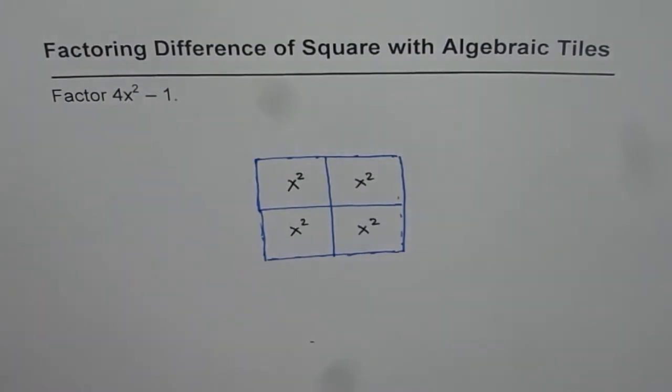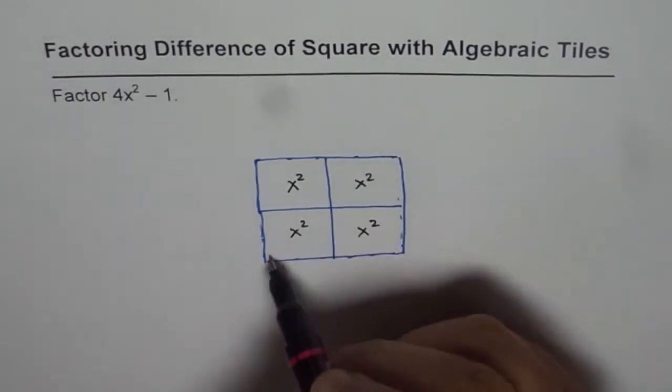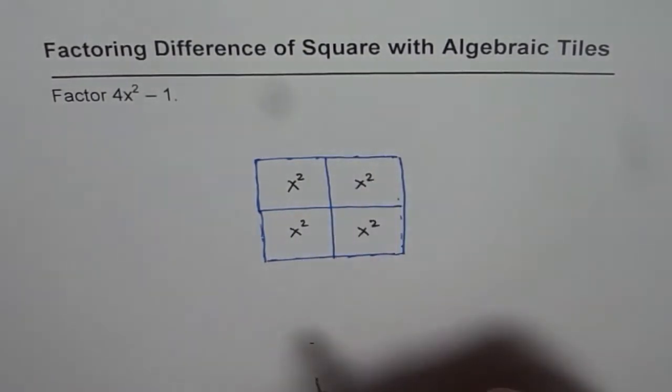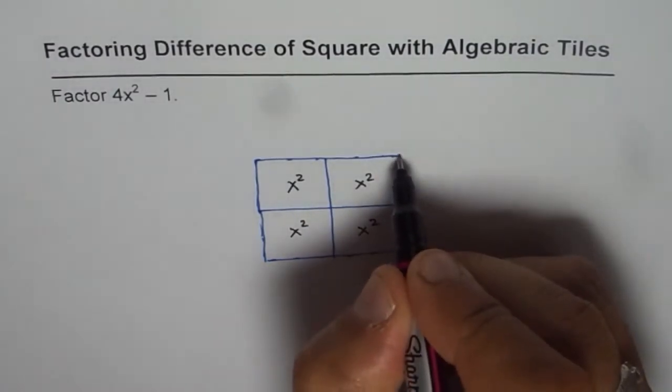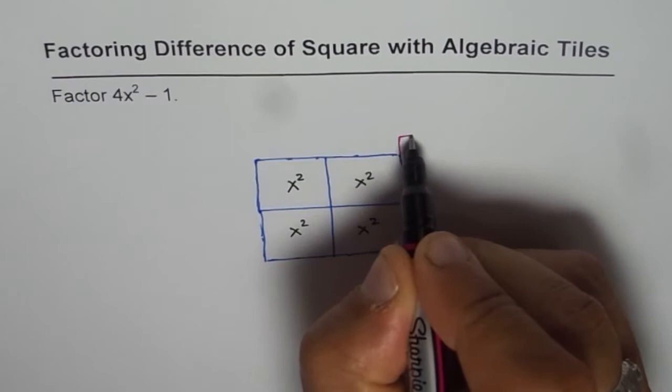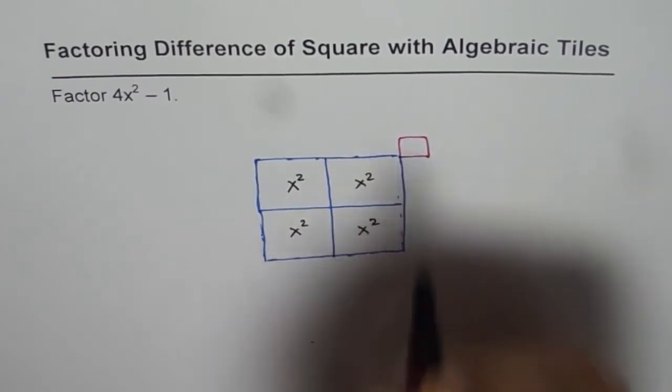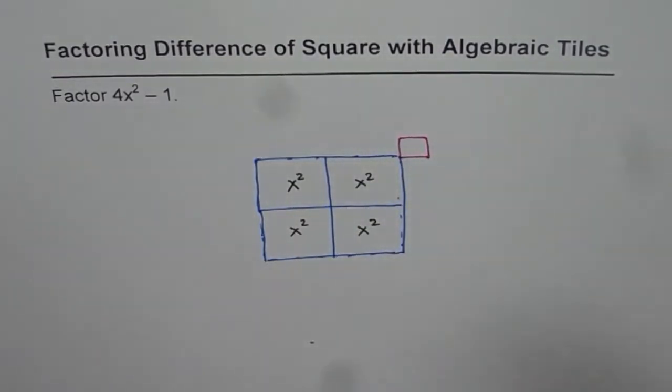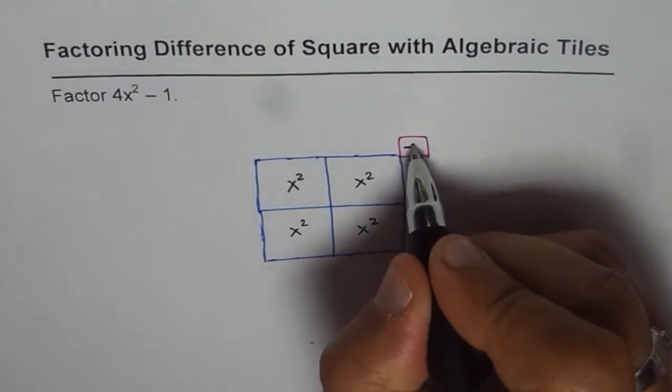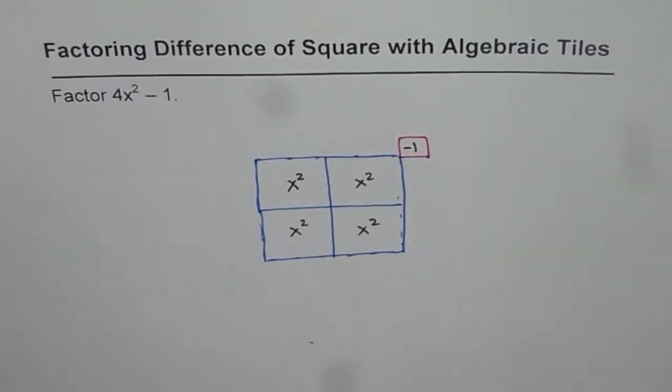Now we have minus 1. As we have seen, minus 1 should be placed diagonally with the x² tiles to form a rectangle. So that is my minus 1 tile using the red color. Now we have 4x² minus 1 tiles.